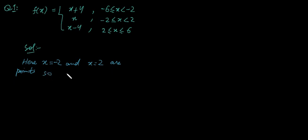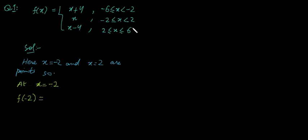We shall discuss the continuity at these two points. Let us take the first point x equals minus 2 and check continuity. The first condition is to find the value of the function at x equals minus 2. We can see that minus 2 is included in the second piece, where x is greater than or equal to minus 2, so the function is defined by the formula x. We simply put x equals minus 2, giving us the value of the function at x equals minus 2.